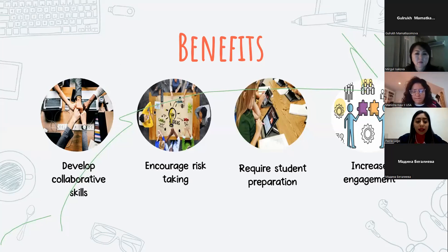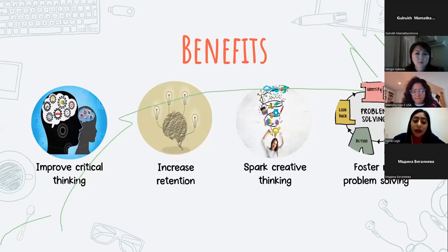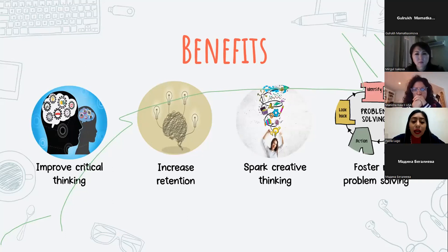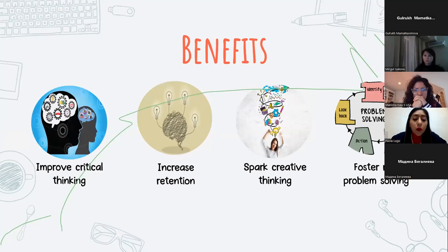Then we have improved critical thinking. Active learning changes the focus from passively assimilating information to being accountable for actively engaging with learning. When students share ideas, they learn to build stronger arguments. And then we have increased retention. According to some experts, a student remembers about 10% of what they read, 20% of what they hear, and 90% of what they do. So active learning classrooms are much more active, and students are often applying their ideas, working on collaborative projects, or using approaches like design thinking to improve their learning.